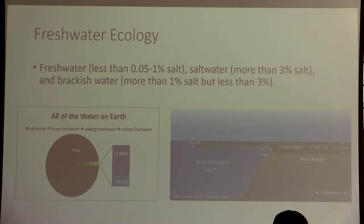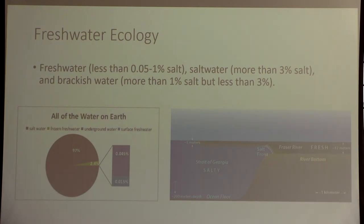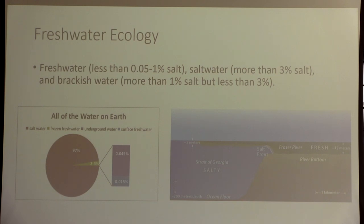Now let's start in on freshwater ecology. Freshwater is anything with less than one percent salt. Salt water is more than three percent salt, and brackish water is somewhere in the middle. Most of the water on Earth is salt water — you've probably heard that before.